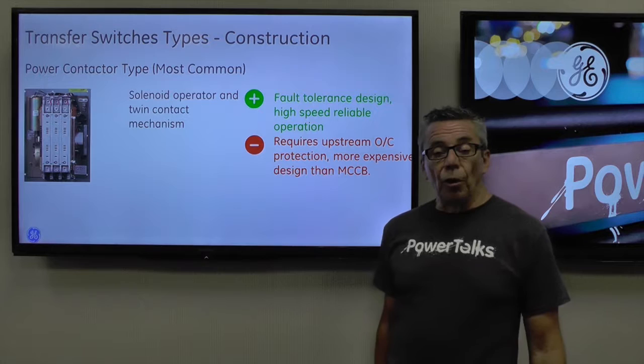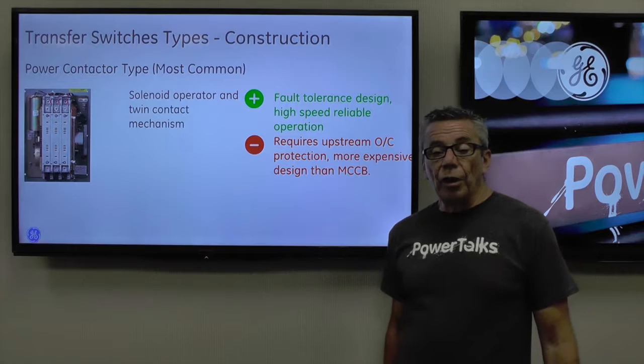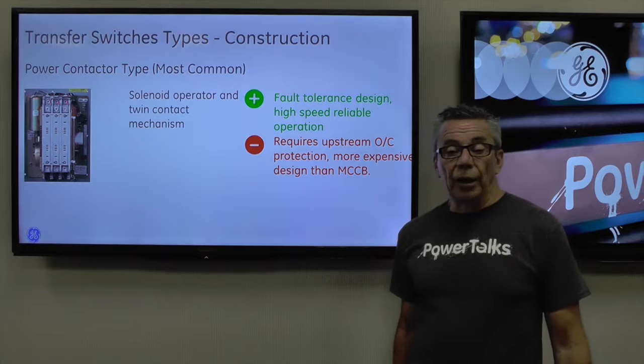The power contactor is usually solenoid operated with a twin contact mechanism. It's very fault tolerant, high speed, and has very reliable operation. It does however require upstream overcurrent protection and is typically more expensive to design than the MCCB.